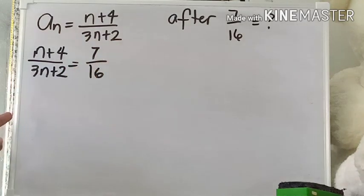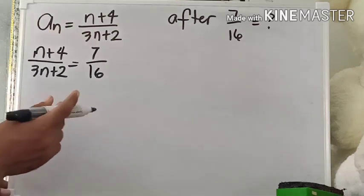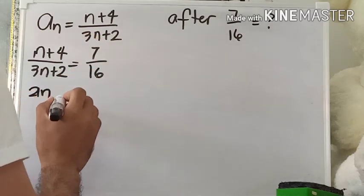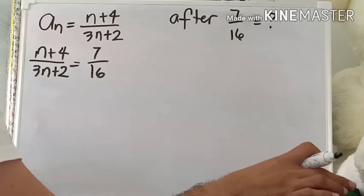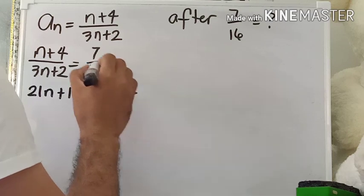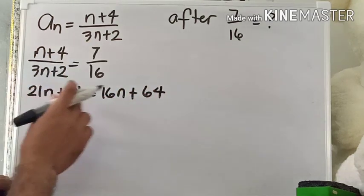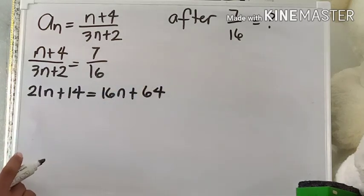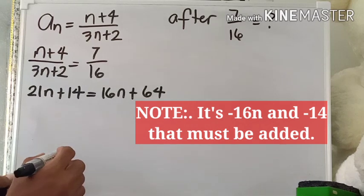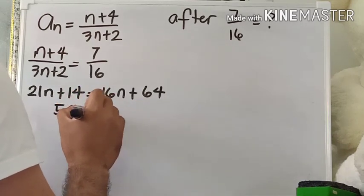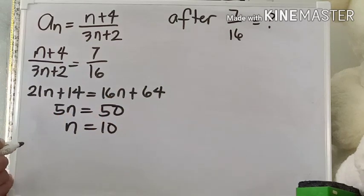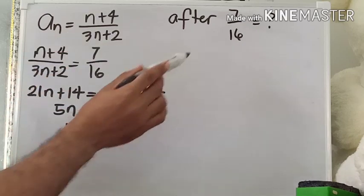This equation will help us solve for the value of n. We solve this as a proportion by cross multiplication: we get 16(n + 4) = 7(3n + 2), giving 16n + 64 = 21n + 14. Treating this as a linear equation in one variable and adding negative 16n and negative 14 to both sides, we get 5n = 50. Dividing both sides by 5, n equals 10.